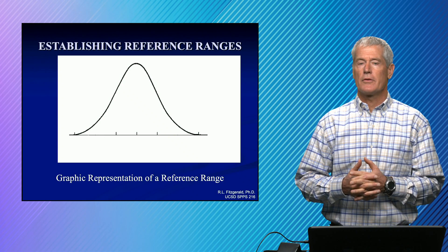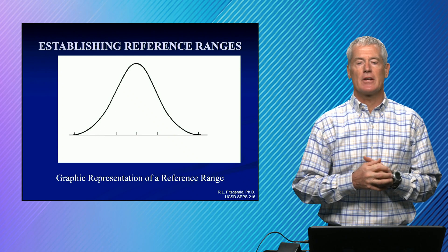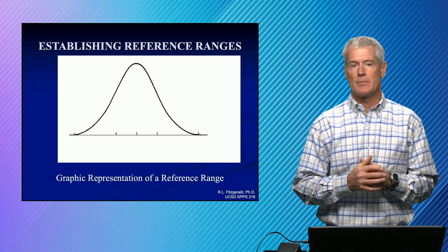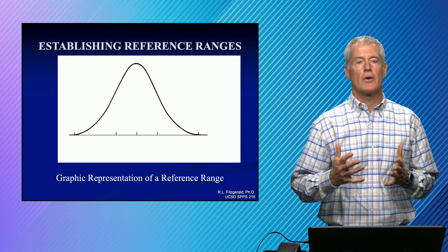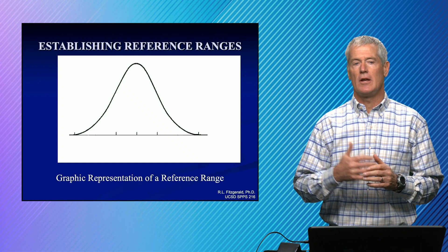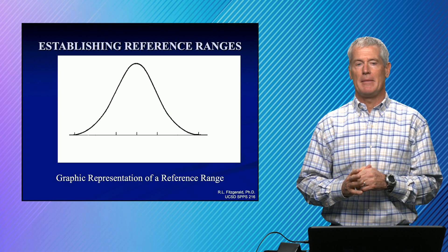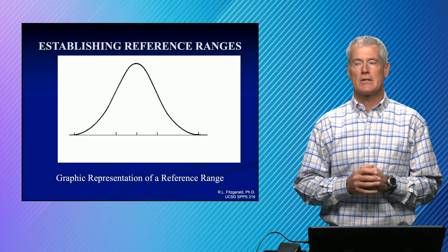So reference ranges, this is a Gaussian range. And in order to determine a Gaussian range, you need about 30 subjects. So you find 30 healthy subjects that are disease-free, you test them with a laboratory test, you plot them as a histogram.